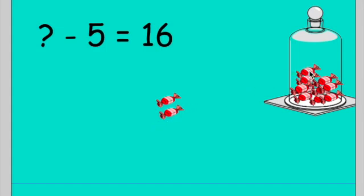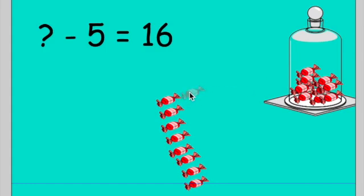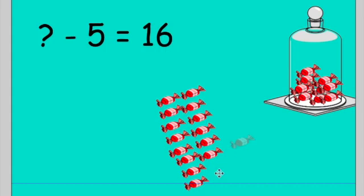So 16. [Counts out 16 sweets: 1, 2, 3, 4, 5, 6, 7, 8, 9, 10, 11, 12, 13, 14, 15, 16.] Let me just double check that I've definitely counted correctly. [Recounts: 1, 2, 3, 4, 5, 6, 7, 8, 9, 10, 11, 12, 13, 14, 15, 16.] So that's our largest number — that's what we're going to count. We've got 16 left.